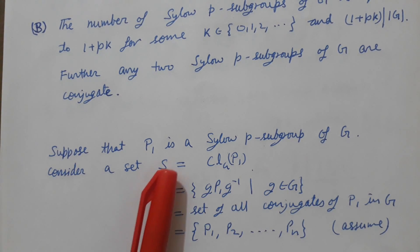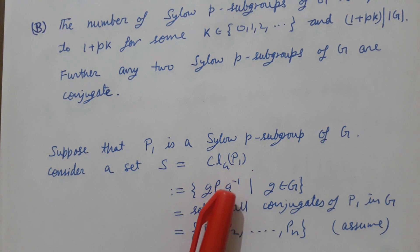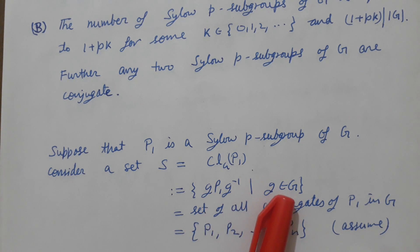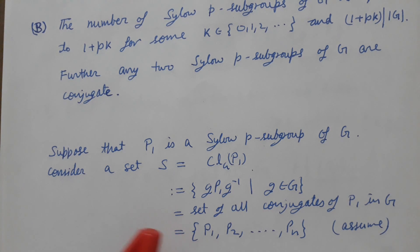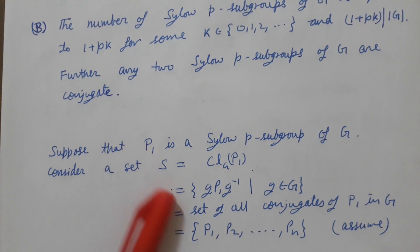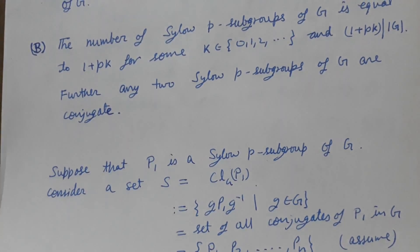Consider S to be the conjugacy class of P1 — that is, the set of all conjugates of P1 in G. Since we are on a finite set, assume S = {P1, P2, ..., Pn}, where P1 is our chosen element and P2, P3, P4, and so on are its conjugates.